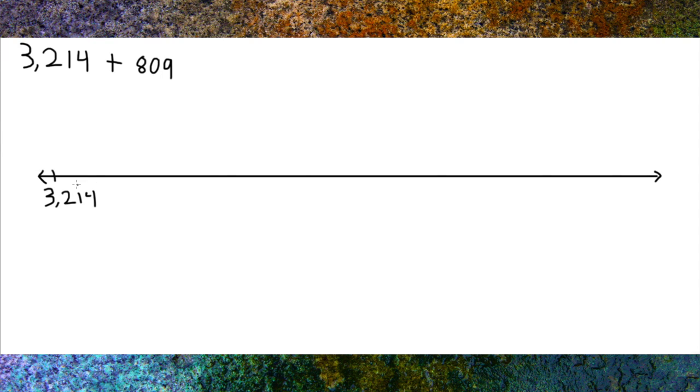This will allow you the room you need to add and move to the right on your number line. First, we jumped 6 to make it an even 3,220.